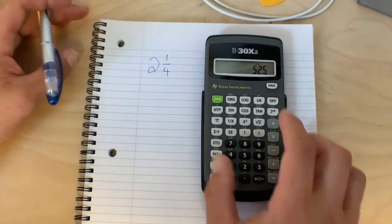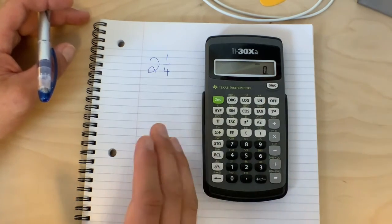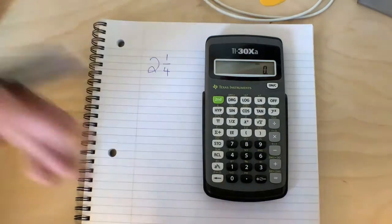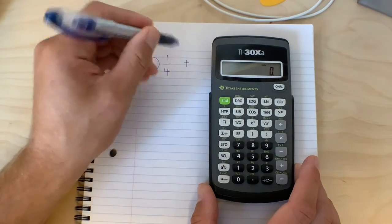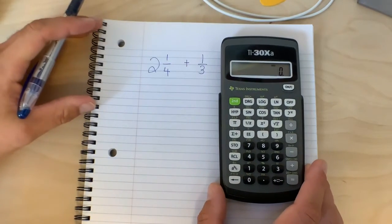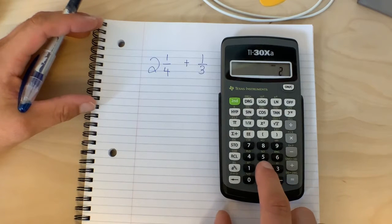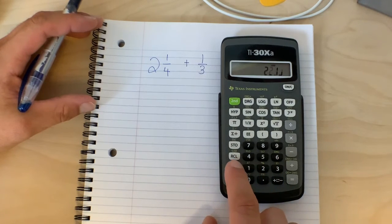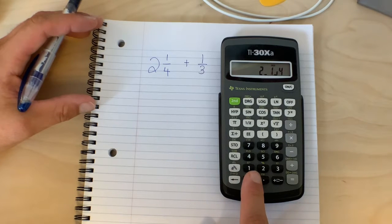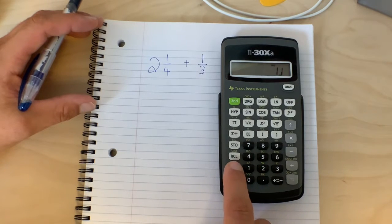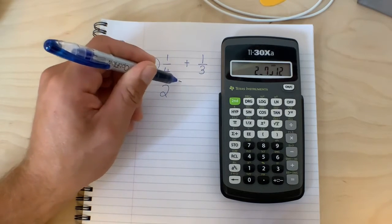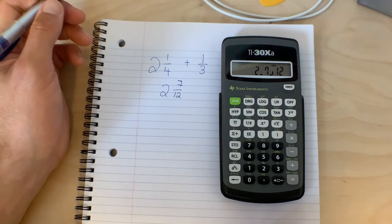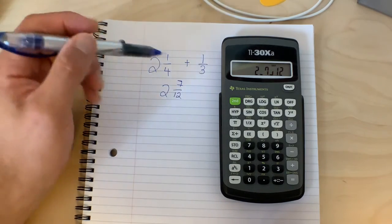We can do anything we want, and that also lets us add multiple fractions or subtract multiple fractions or do anything we want with multiple fractions. So let's say we had two and a quarter and we wanted to add one third. So we would input two and one quarter, so two, fraction button, one, fraction button, four, plus one, fraction button, three, and then hit equals, and we get two and seven over twelve. So obviously the fraction button is super fun.